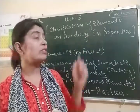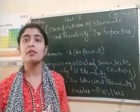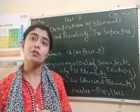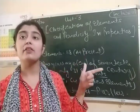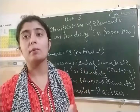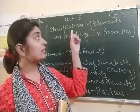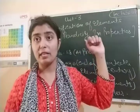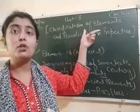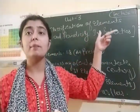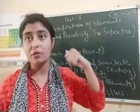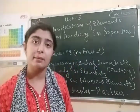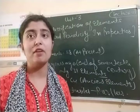So students, before we discuss this unit, firstly we need to know about the history of this unit. As you know, we will first take the term - what is classification of elements? So, how many elements are present in our environment at present? 118 elements are present in our environment at present.